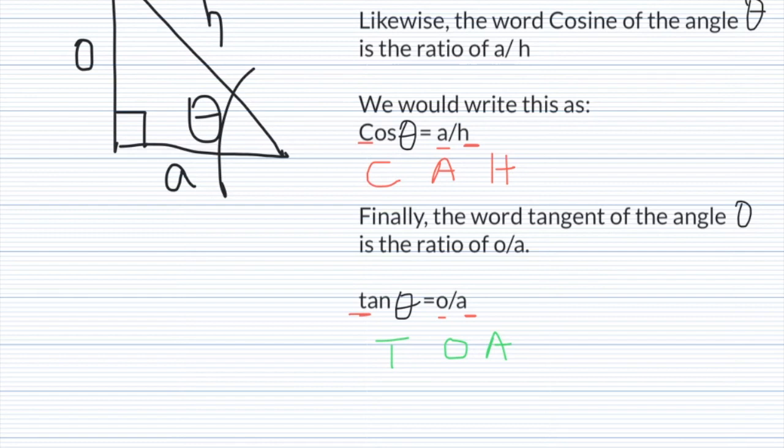Finally, the word tangent of the angle θ is the ratio of opposite divided by adjacent. So the tangent, abbreviated T-A-N, of θ equals opposite divided by adjacent.